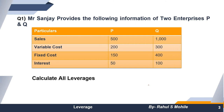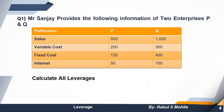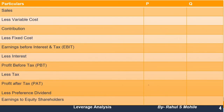Let us read the question carefully. Mr. Sanjay provides the following information of two enterprises, P and Q. So we have two companies' information: particulars for company P and company Q — including Sales, Variable Cost, Fixed Cost, and Interest. We are going to calculate all leverages.